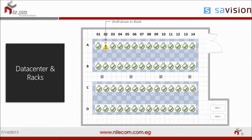Data center and racks provide the option of creating a view containing a specific number of hosts. You can easily monitor which host is not performing well in your environment, drill down into that host, and find the exact error. This is very useful for finding problems before they become critical — what we call proactive monitoring.